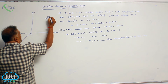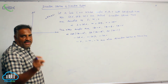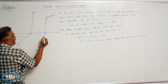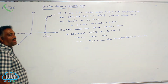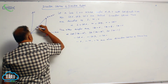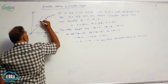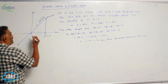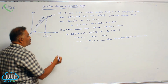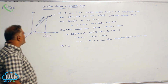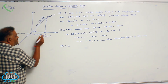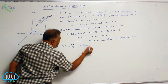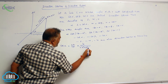Let us take a point P(x, y, z) in 3D space. Dropping a perpendicular onto the x-axis gives the foot at (x, 0, 0). The distance OP is R = √(x² + y² + z²). Since we are measuring along the x-axis, the angle is alpha, and cos alpha equals ON divided by OP, which is x divided by √(x² + y² + z²).